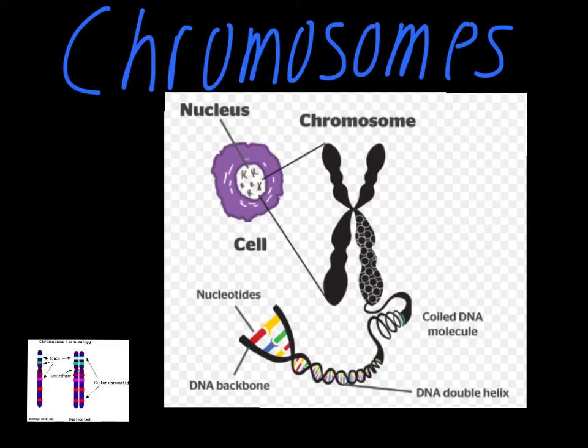That's pretty much what the nucleus of a eukaryotic cell looks like. In order to go through the process of cell division, the cell has to move that DNA around and move a new set of DNA into the new cell being created at the end of cell division. That would be nearly impossible if the DNA was a jumbled mess inside of the nucleus.